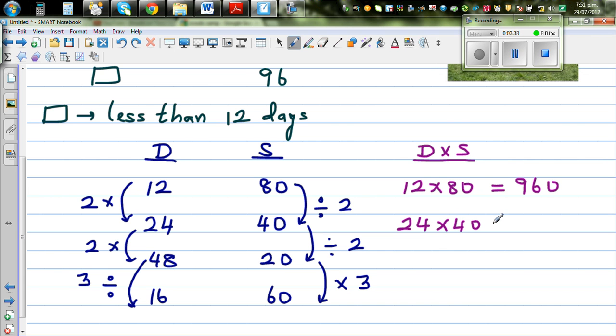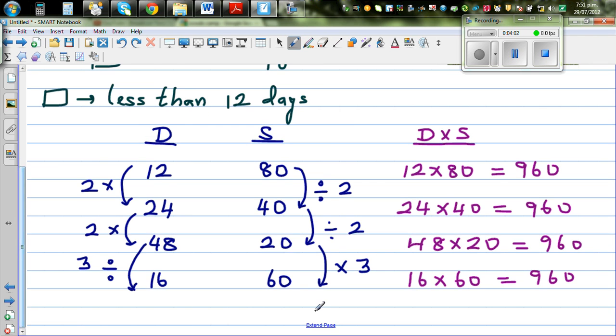This is 24 times 40. What is 24 times 40? That is also 960. 48 times 20 is also 960. And 16 times 60, that's also 960. So this is a very interesting fact. The product, if it's an inverse proportion, the product of the quantities would be one constant number.